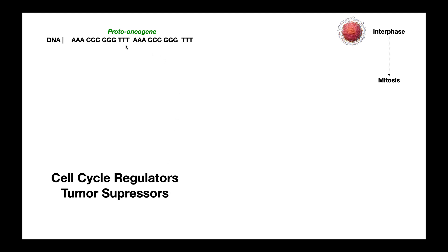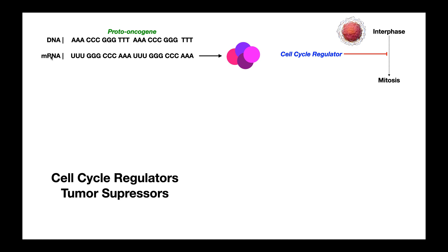Before we get into proto-oncogene and oncogene, let's consider this DNA strand right here. I've got it divided up into segments of three nucleotides to make it easy. A DNA strand is going to be transcribed into messenger RNA, or mRNA. You can see the codons here — triplet nucleotides — and they're complementary to the nucleotides of the DNA strand. This is our mRNA strand, and then our mRNA strand is going to be translated into a protein. In this context, this protein is a cell cycle regulator.